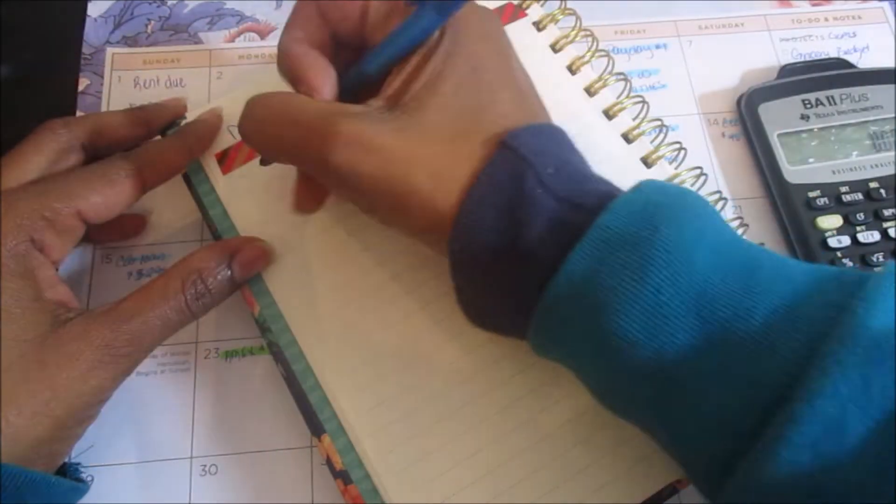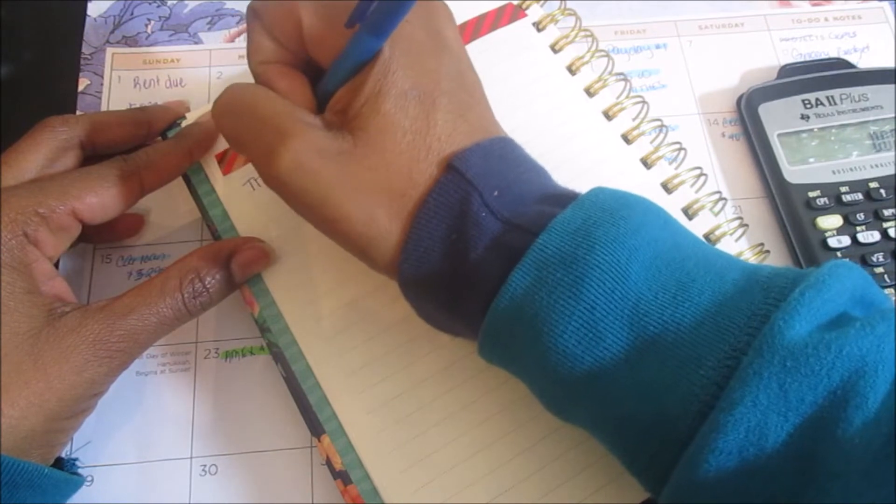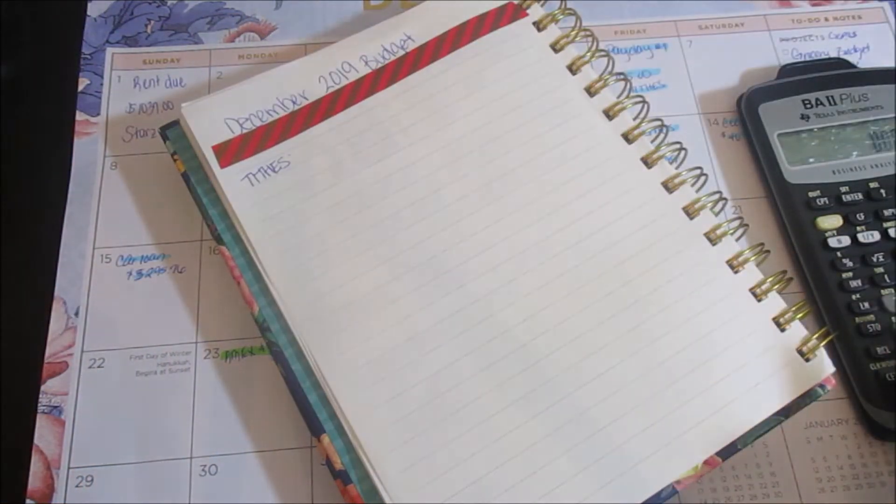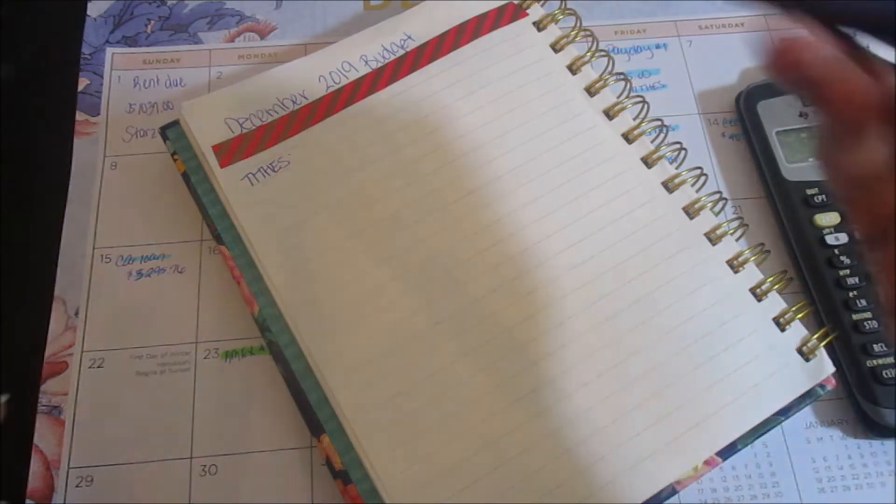So of course we're going to start with my tithes. I'm just going to do this for the whole month and I pay $350.